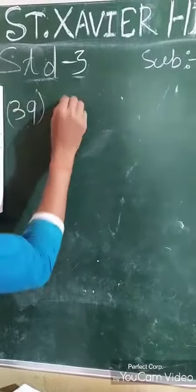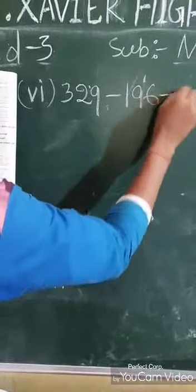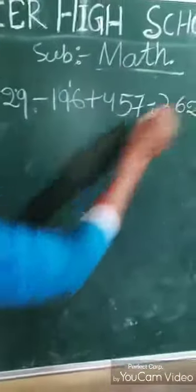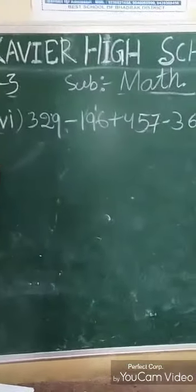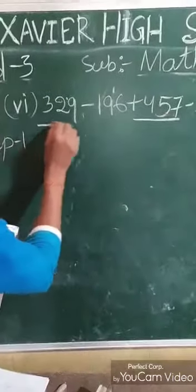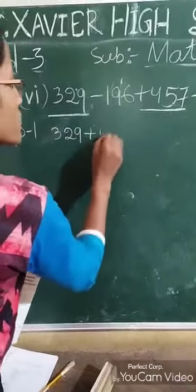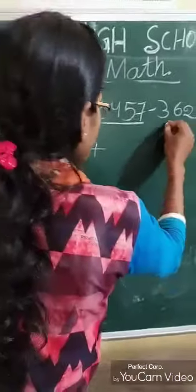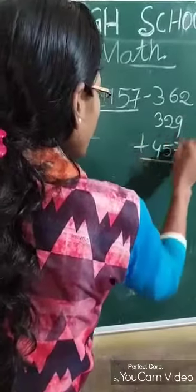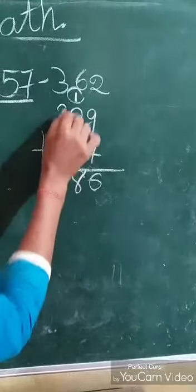329 minus 196 plus 457 minus 362. There are some steps. Step 1: Add the numbers that have a plus sign or no sign before them — that is 329 plus 457. Arranging: 9 plus 7 is 16, write 6 carry 1. 2 plus 5 is 7, plus 1 is 8. 3 plus 4 is 7. So 329 plus 457 equals 786.